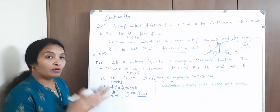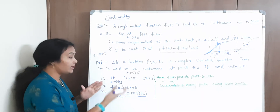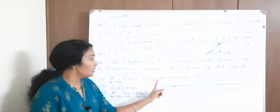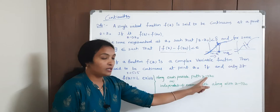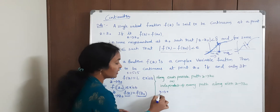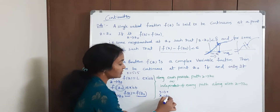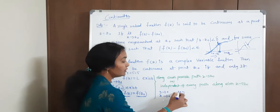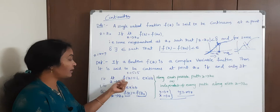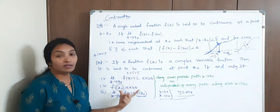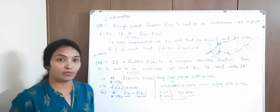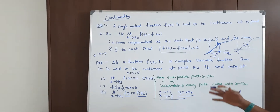To check a continuous function, it is the same as our previous method for limits. Along each possible path as z tends to z naught, you check along the x-axis, along the y-axis, and then along the path y equal to mx. These three conditions must be satisfied. If the function value and limit value are all the same, then the limit exists, and automatically you can say that it is continuous. This is the definition of continuity.